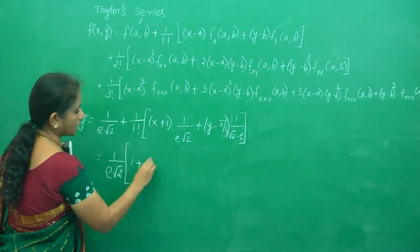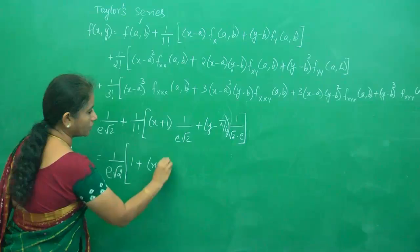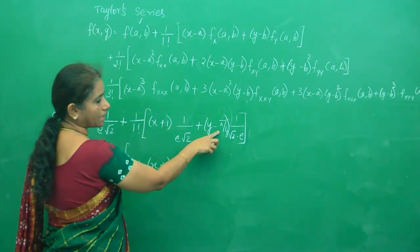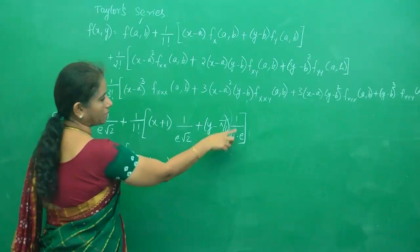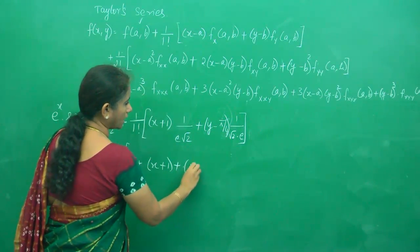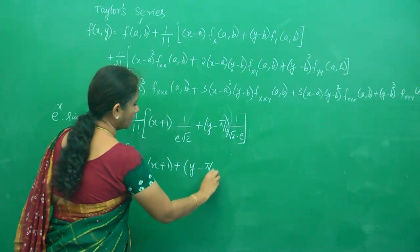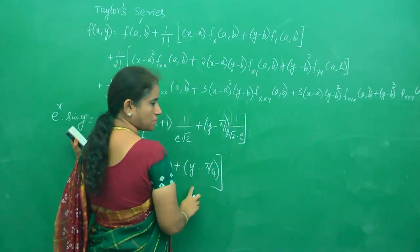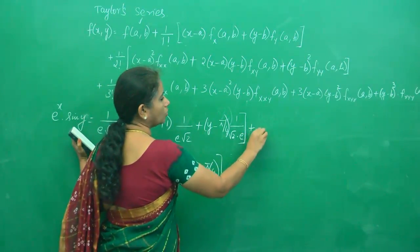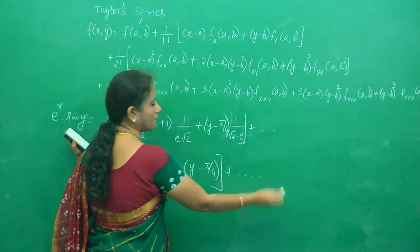1/(e√2) is taken out as a common factor. When it's taken out, (x + 1) is left here, plus (y - π/4) is left here. This much you can simplify.